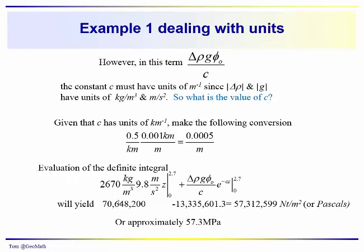Evaluating the first term, we get about 70.65 megapascals. This term becomes negative, and we're subtracting minus 13.3 megapascals, and we get about 57.3 megapascals, or 57,312,599 newtons per meter squared, or pascals. So again, megapascals tend to be the more convenient unit, smaller numbers to play around with.